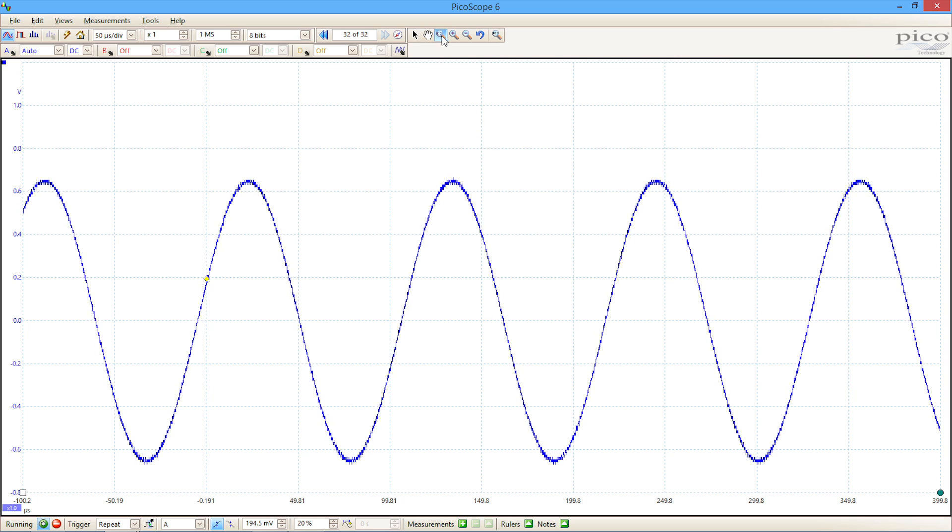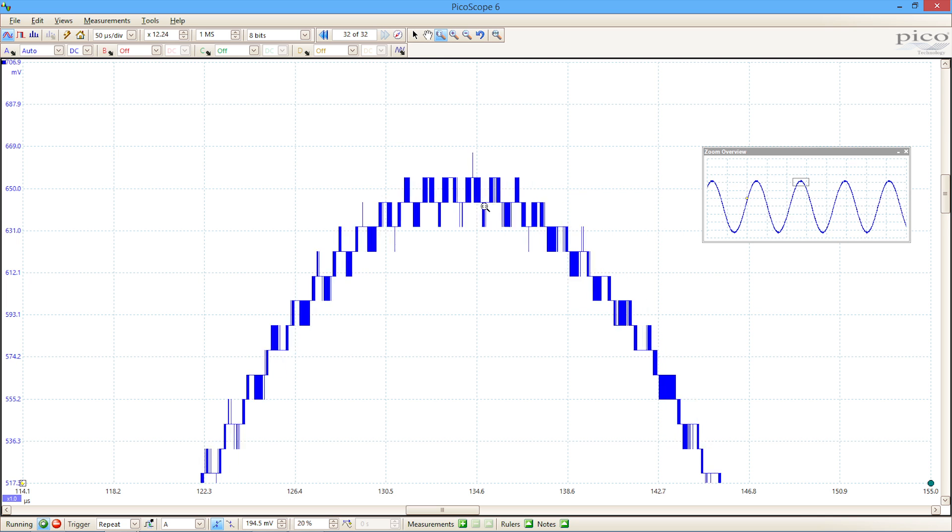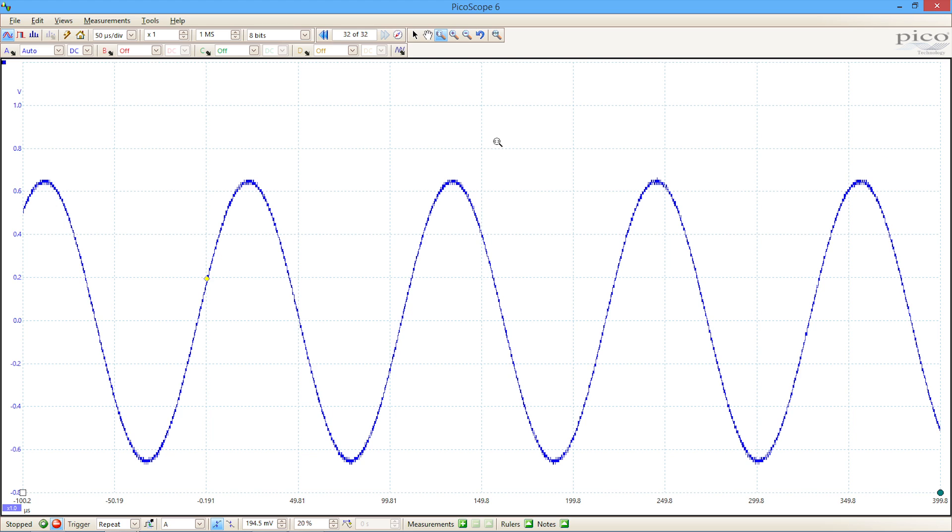So we could use the zoom control to zoom in on one of those peaks and see what's going on. Now if I freeze it for a moment you can see actually it hasn't really told us very much more information. We're essentially looking at the quantization levels between each of the bits of resolution of the analog to digital converter. So what we can do with the 5000 series is we're not limited to just acquiring data with 8-bit resolution. We can have higher bits of resolution. So we'll switch now to acquire that same signal with 12 bits of resolution and see what difference it makes.